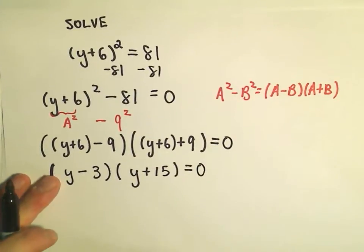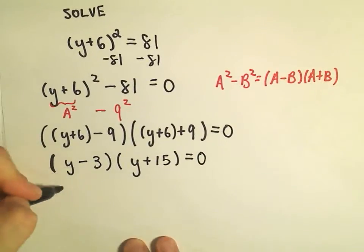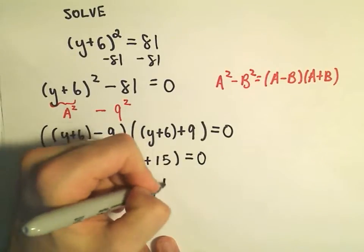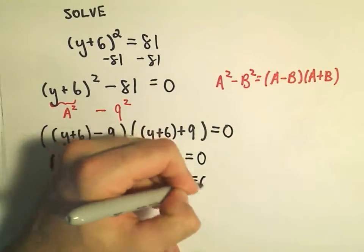And now that we have it factored, we just do the same thing. We set the first factor equal to 0. We set the second factor equal to 0.